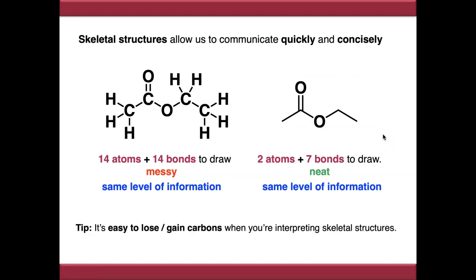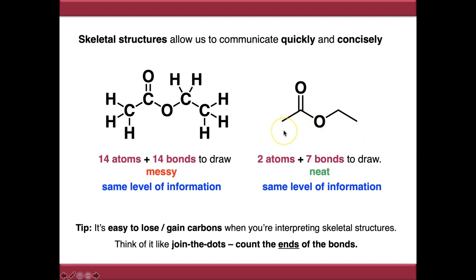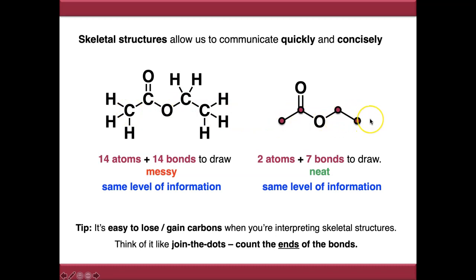A lot of people new to skeletal structures either lose or gain carbons when interpreting them. My top tip is to think of it like join the dots — when counting carbons, count the ends of the bonds, not the bonds themselves. So in this molecule we can see we've got one, two, three, four carbons. The reverse is true when drawing: if you convert all your carbons into dots and join them with lines, you'll end up with something closer to a fully skeletal structure.